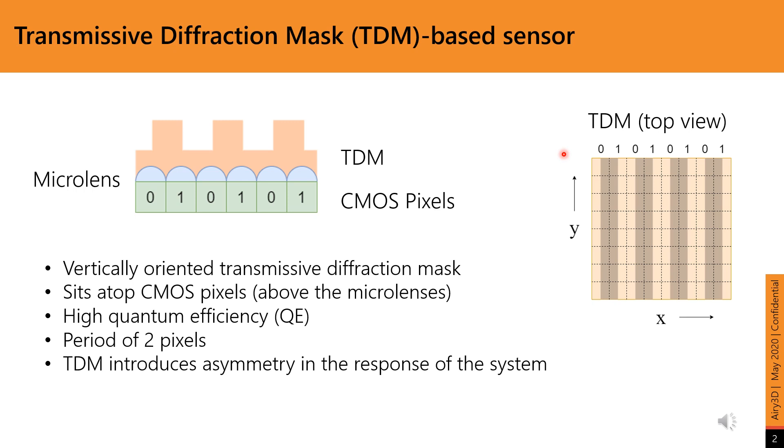For our work, we use a TDM with vertically oriented gratings that have a period of 2 pixels. The vertical gratings introduce an asymmetry in the response of the system along the x-axis.